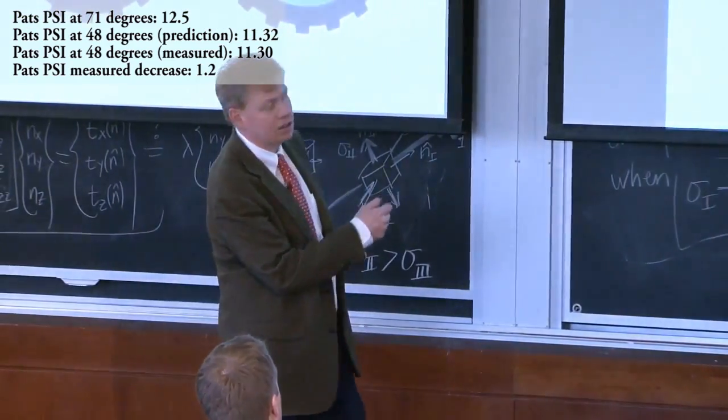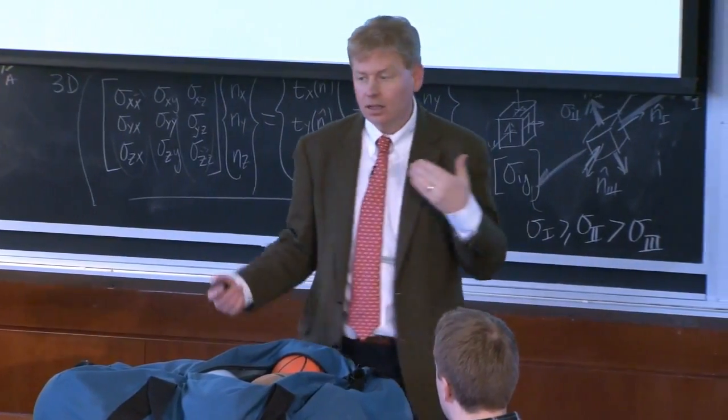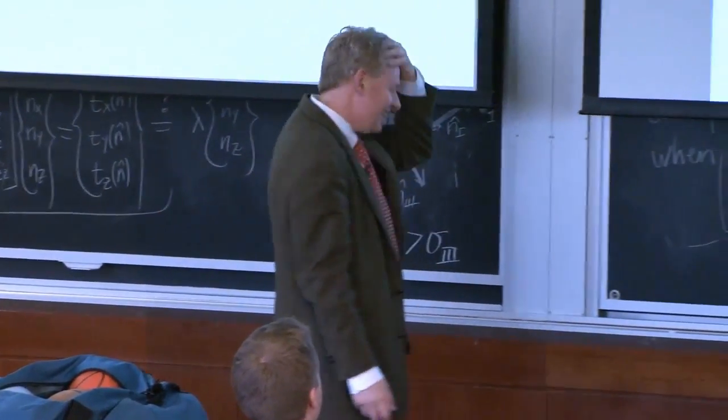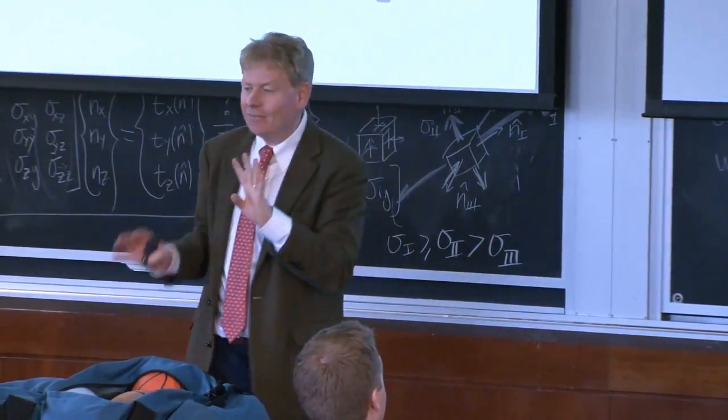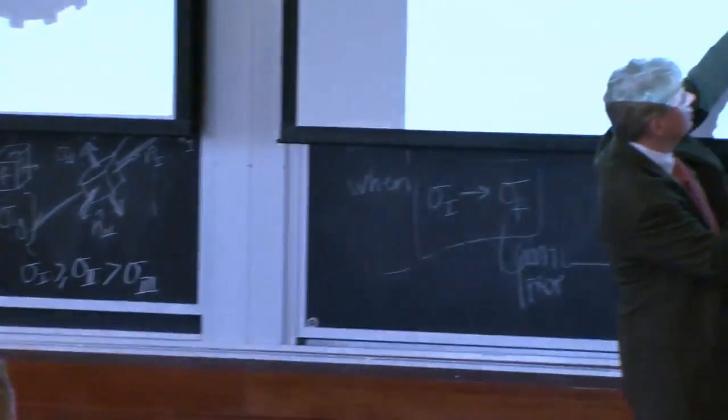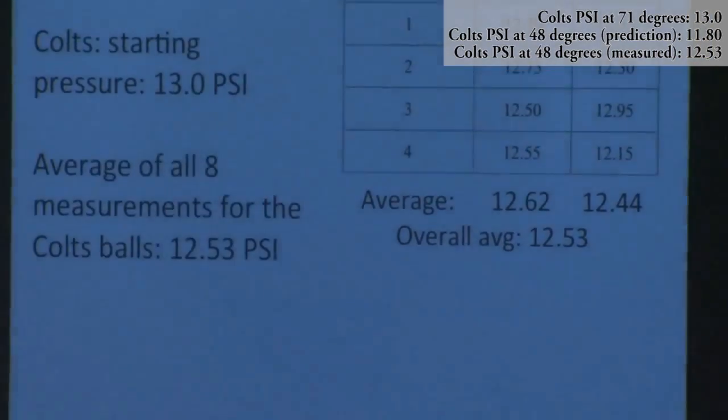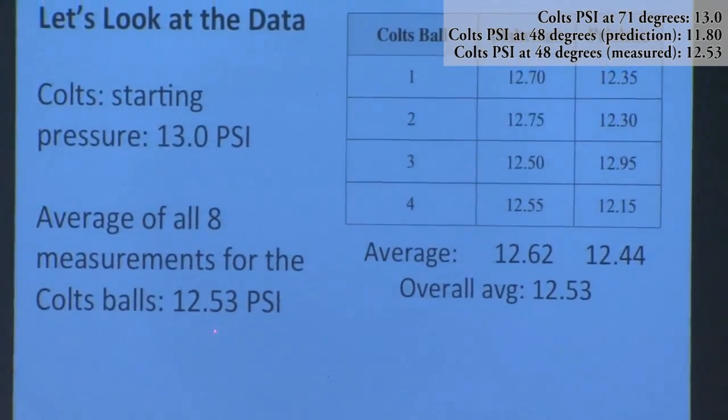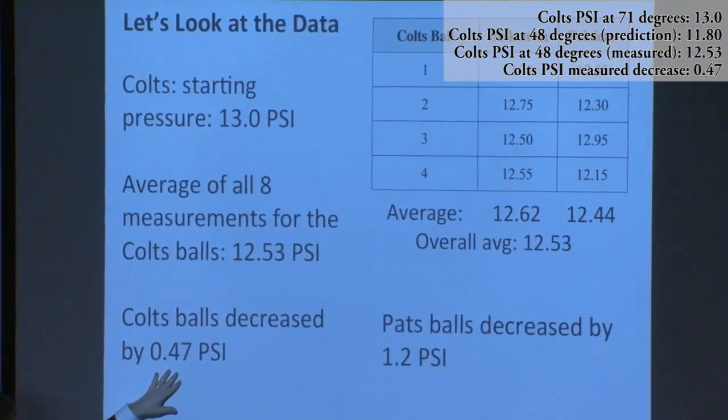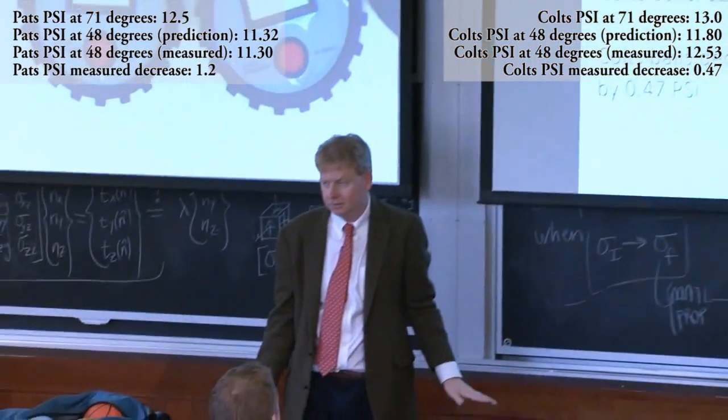The Colts balls started at 13. They only measured four Colts balls. The hypothesis is they ran out of time because halftime is only 13.5 minutes. If you take the average of the four balls, two readings each, you get 12.53. The Colts balls decreased by 0.47 psi. The Patriots balls decreased by 1.2 psi. What's going on?